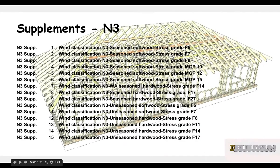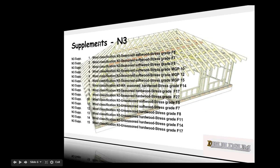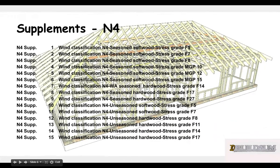We have the same for N3 wind speeds — so another 15 — again covering all the F8 stress grades and the MGP stress grades. And we also have the same for N4. So there's quite a few supplements that go along with the actual code itself.